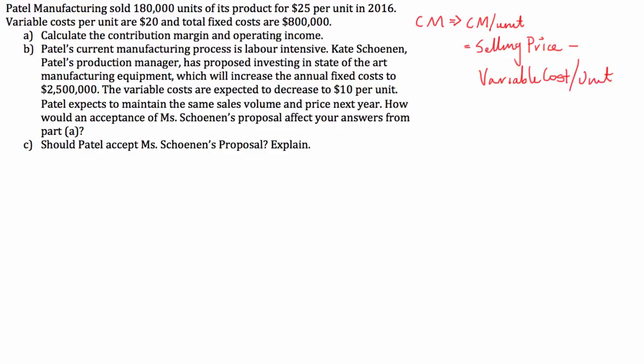So in this case, if we go down to part A, the contribution margin per unit would equal the selling price, which is $25, minus the variable costs per unit, which is $20. And it doesn't take a calculator to work that one out, it's going to be $5 per unit.